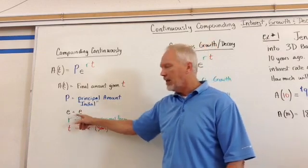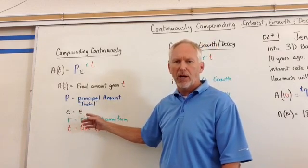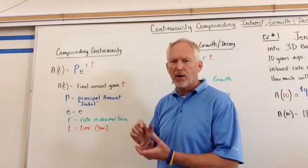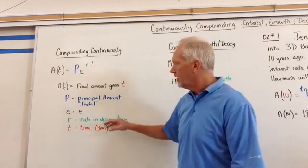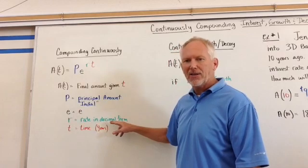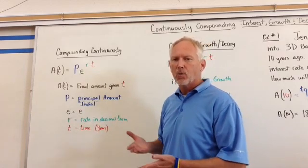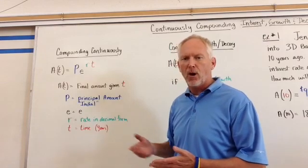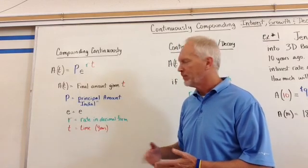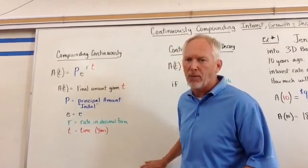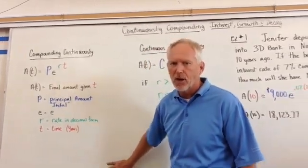E is just e, 2.718 something. You can look that up, usually use your calculator and put it in as e to the x. Then r is the rate in decimal form. When we do anything with interest we want the interest rate to always be in decimal form. And t is time, typically in years, but you might see problems where they change it or alter it.